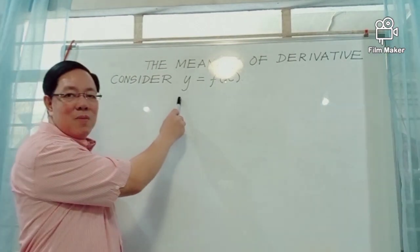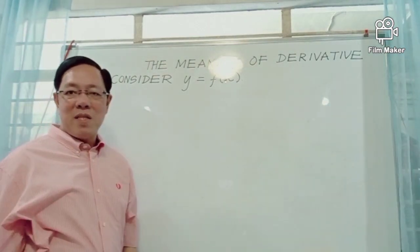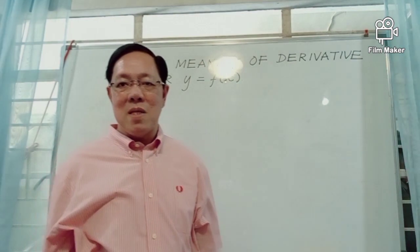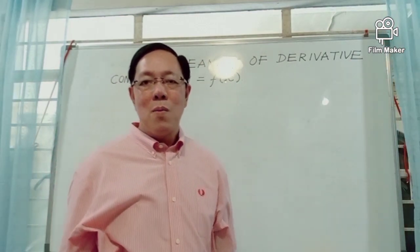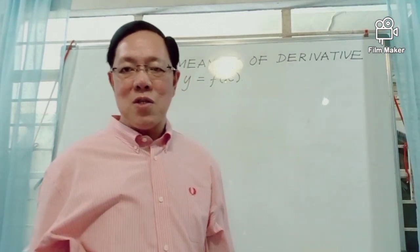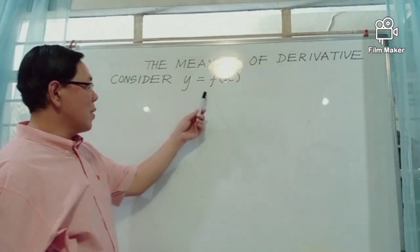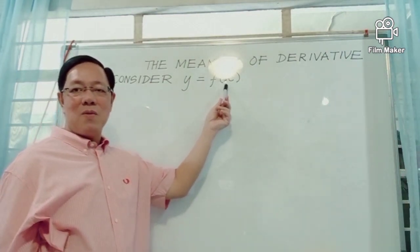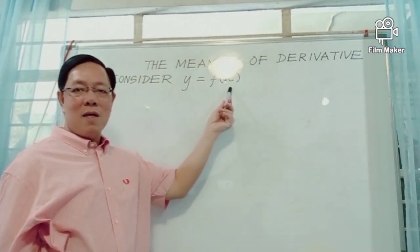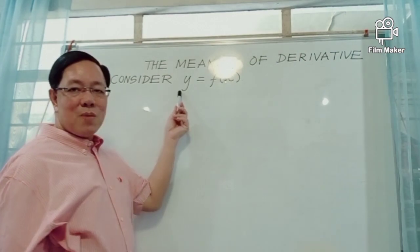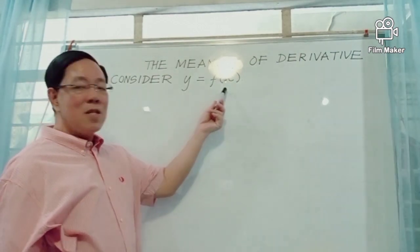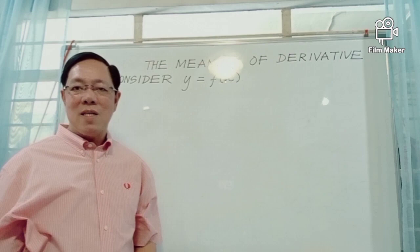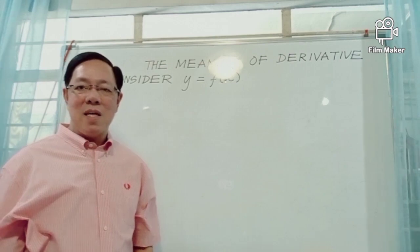The variable y is called the dependent variable because the value of y can be determined only once the function f has been evaluated at some specific value for x. That means the value of y depends on the value of x — that's why we call y the dependent variable.